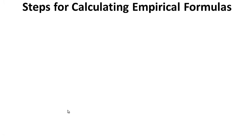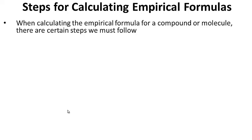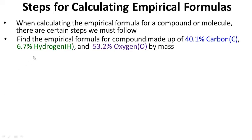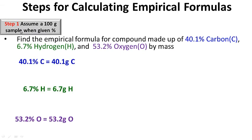Steps for calculating empirical formulas — here's where you need to listen. Find the empirical formula for a compound made up of 40.1% carbon, 6.7% hydrogen, and 53.2% oxygen by mass. Step one: assume a 100-gram sample when given percent. So 40.1% becomes 40.1 grams of carbon, 6.7% becomes 6.7 grams of hydrogen, and 53.2% becomes 53.2 grams of oxygen.